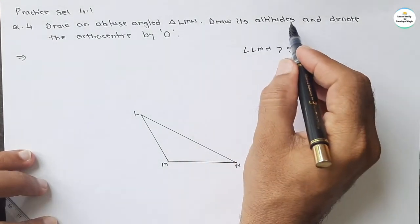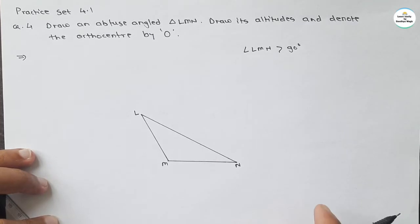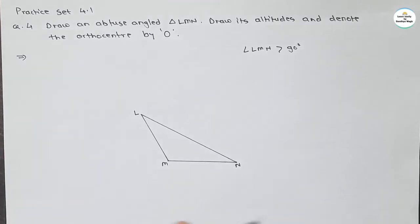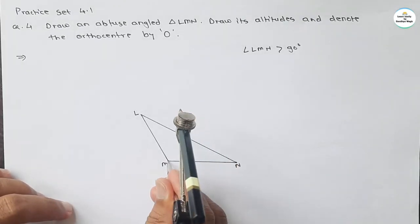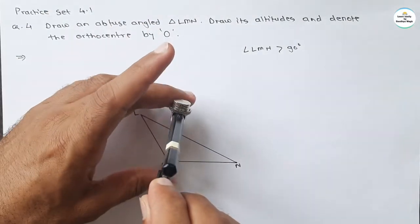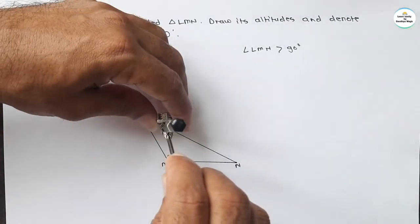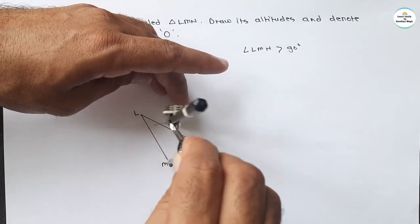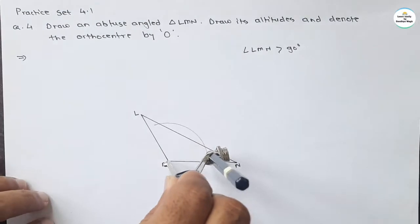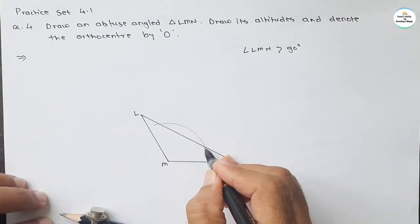What is asked? Draw its altitudes. You know the procedure to draw altitudes. Take the compass, take the center M, and cut the opposite side in two distinct points. If we cut this opposite side in two distinct points with the arc taking center M, we are getting two intersecting points.